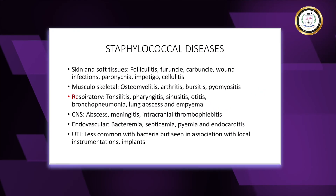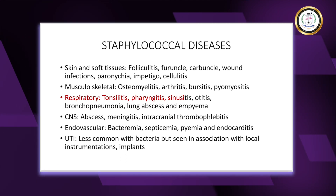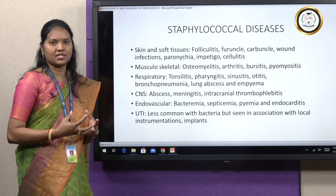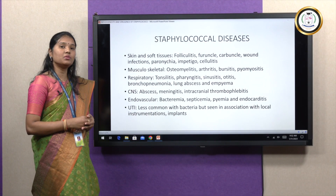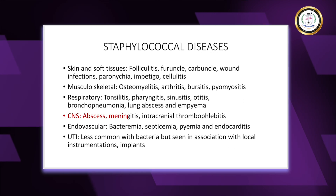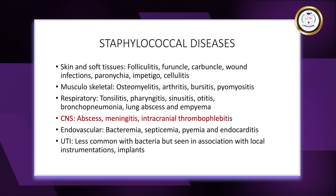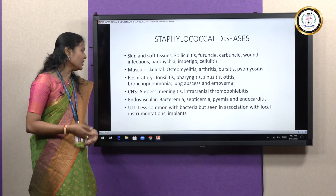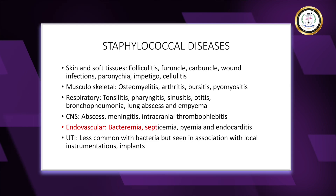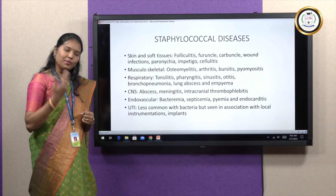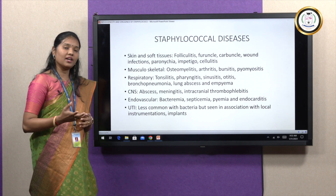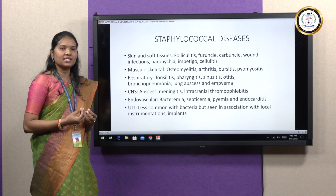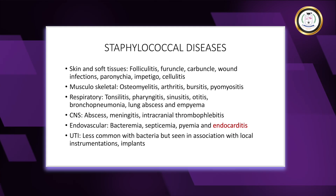Respiratory infections include tonsillitis, pharyngitis, sinusitis, otitis, bronchopneumonia, lung abscesses, and empyema — where pockets of pus are filled in internal organs. Central nervous system infections include brain abscesses, meningitis (inflammation of the meninges), and intracranial thrombophlebitis — the formation of blood clots inside the brain. Endovascular infections include bacteremia (circulation of bacteria in blood), septicemia — where bacteria multiply in blood producing toxic products along with high swinging fever — and pyemia, where pyogenic staphylococci cause pus-filled lesions in internal organs, as well as endocarditis (inflammation of the heart muscles).